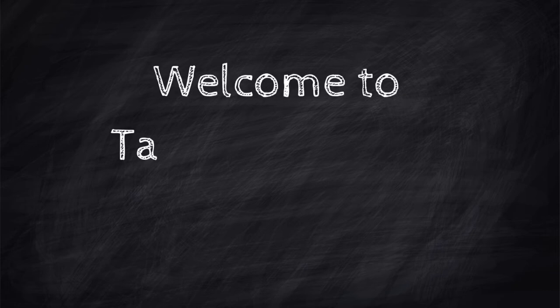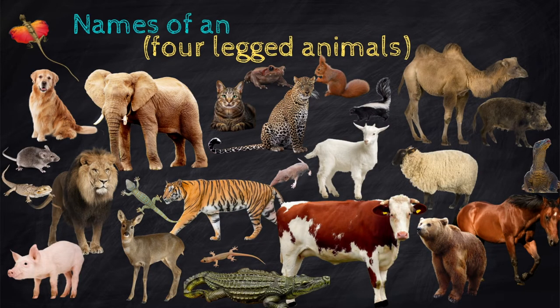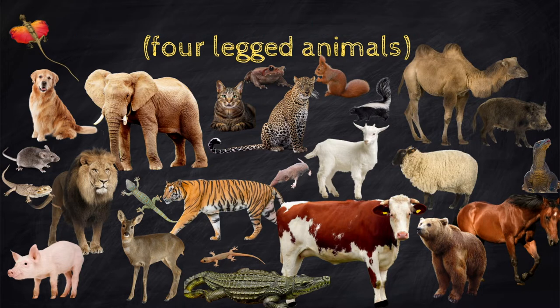Welcome to Tausug Learning Channel. In this video, we are going to name all of the four-legged animals in Baasasug. These animals are mostly found in Southeast Asia. Let's start.